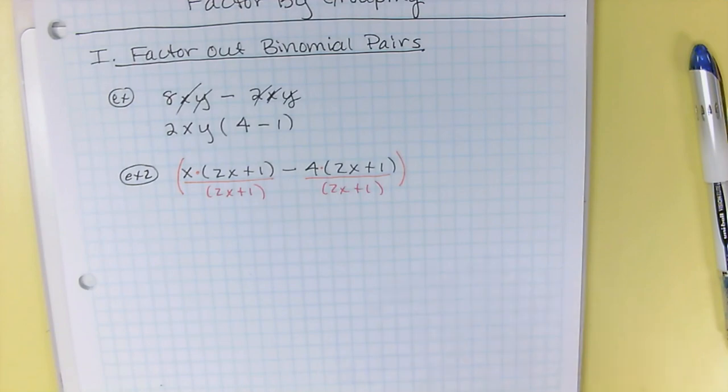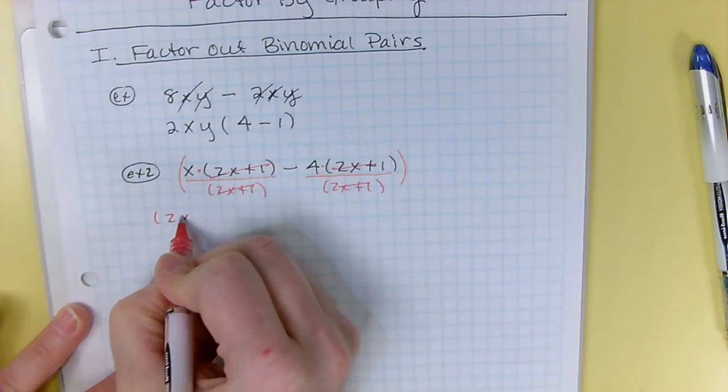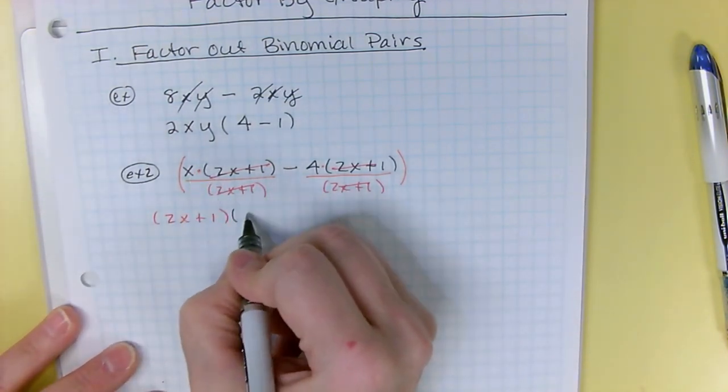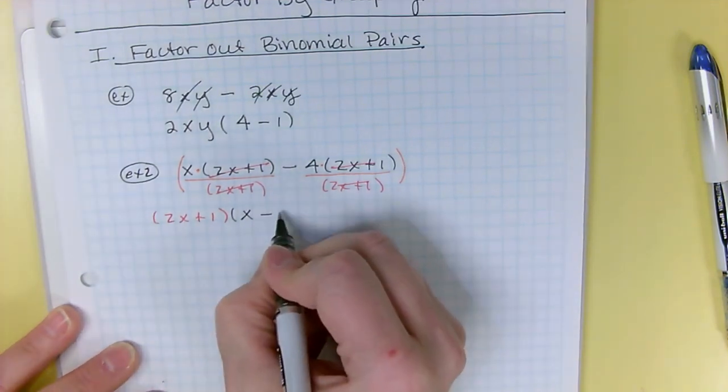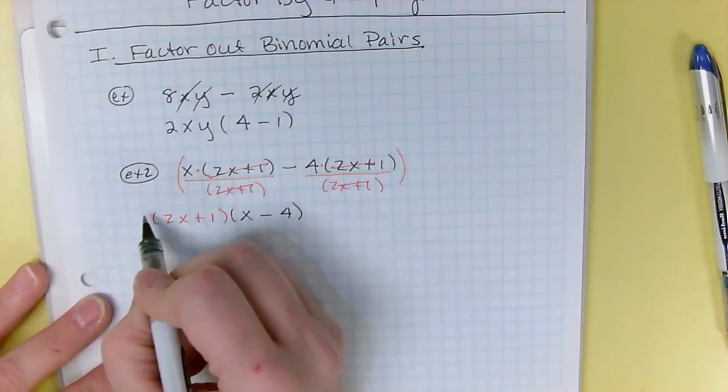what they both have in common is a 2x plus 1 factor. So just like when you divide out a monomial, you're going to divide out the 2x plus 1, it goes to the front, and then what's left is an x in the first term minus 4 in the second term. So you're still dividing out, you're just dividing out a binomial instead of a monomial. That's factored by grouping. Pretty simple, huh? It's not super complicated.